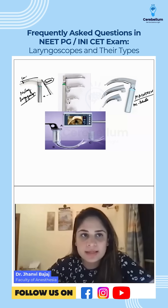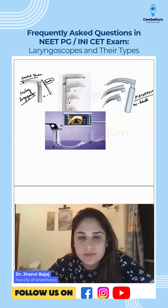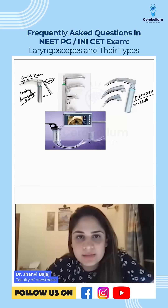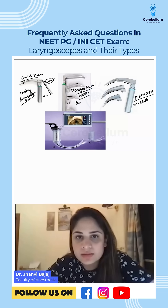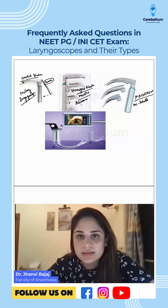Whenever you have a curved blade plus a lever, this is the McCoy laryngoscope — asked in exams very often. This is a straight blade laryngoscope. The name is Miller, and it is used in children.